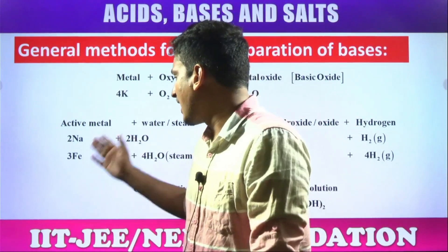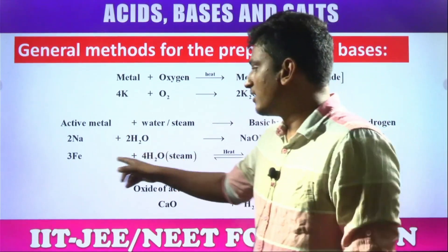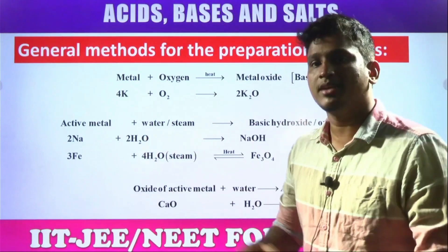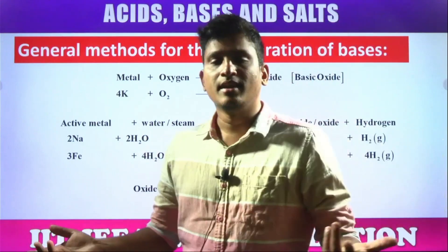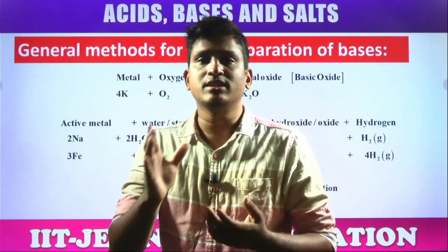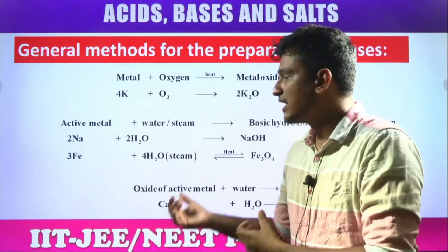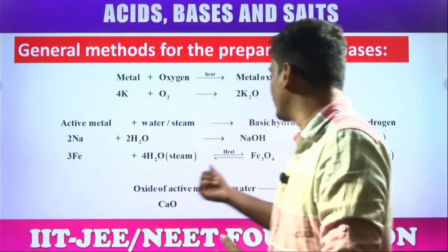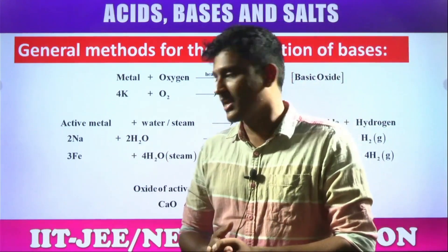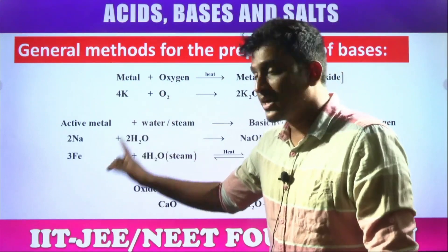Iron is taken as an example: iron reacts with steam — not normal water — to produce a compound. Steam is H₂O in vapor form but at high temperature; that is the difference between vapor and steam. Steam has high temperature. At these conditions, iron reacts with steam to produce iron oxide and the respective hydrogen gas.